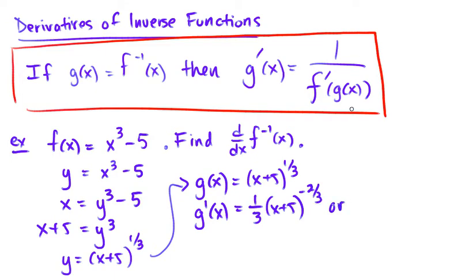Or we can use this and get g prime of x equals 1 over f prime. So we need to calculate f prime, and it's 3x squared. So we get 3, but instead of x we replace it with g of x, and g of x is x plus 5 to the 1 third.